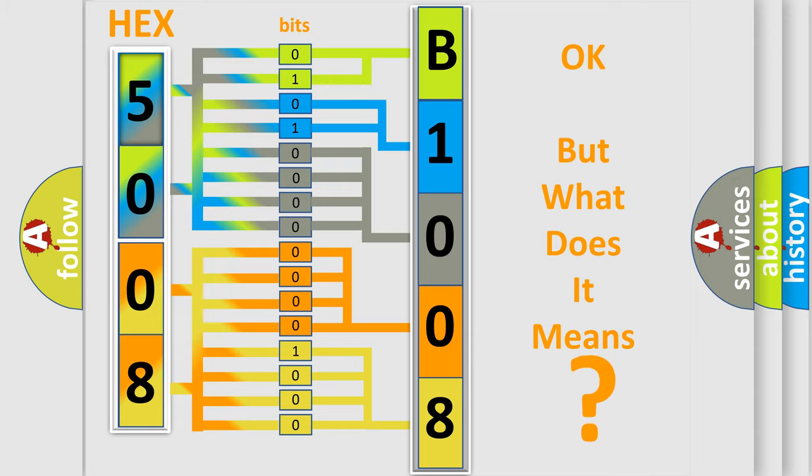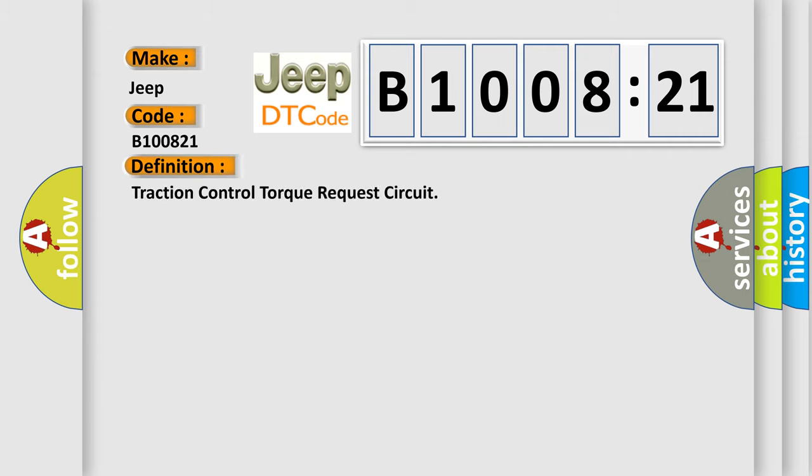So, what does the diagnostic trouble code B100821 interpret specifically for Jeep car manufacturers? The basic definition is: traction control torque request circuit. And now this is a short description of this DTC code.